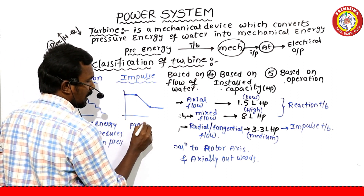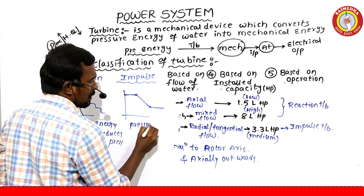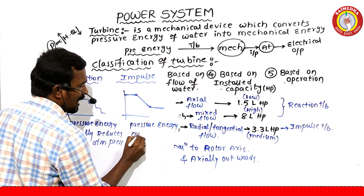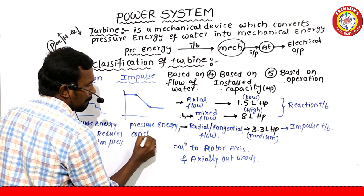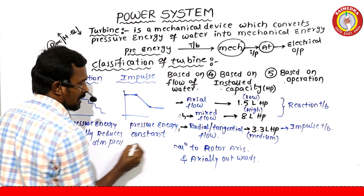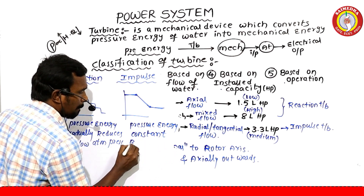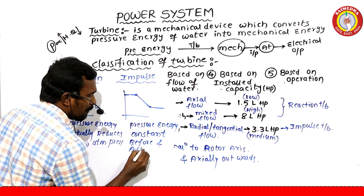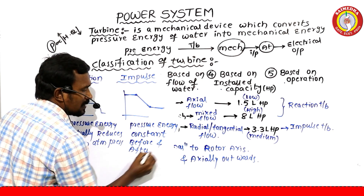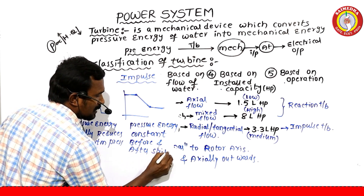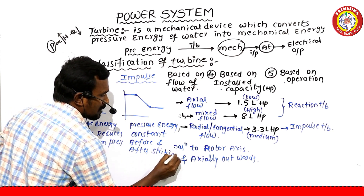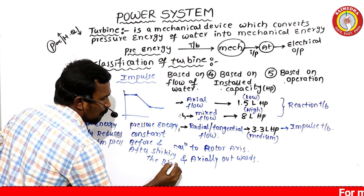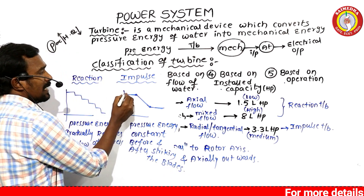In an impulse turbine, the pressure energy is constant before and after striking the blades. The water strikes the blades at constant pressure.